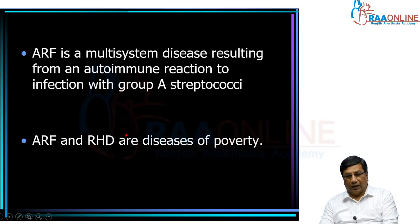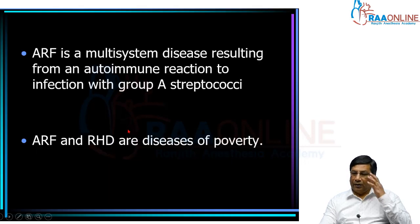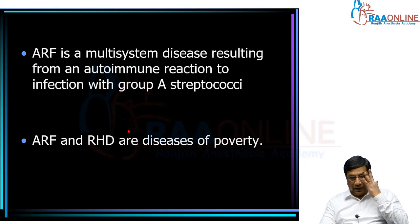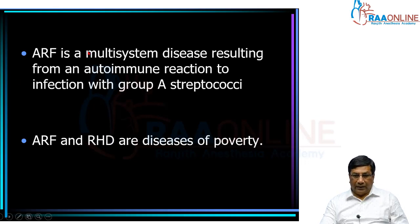In this lecture, we are going to cover all aspects of acute rheumatic fever. Acute rheumatic fever is a multi-system disease resulting from an autoimmune reaction to Group A Streptococcus, which you can remember as GAS — Group A Streptococcus.